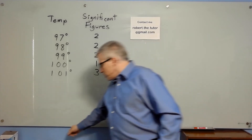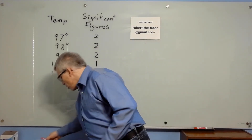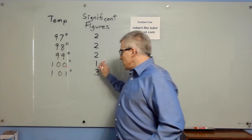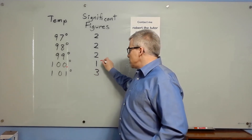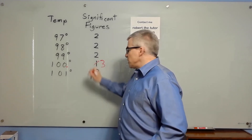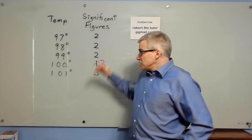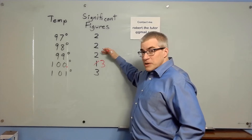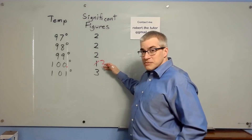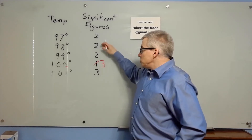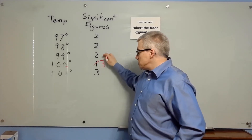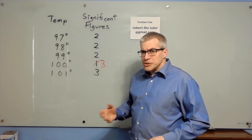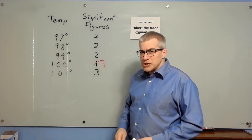Now, some people would nitpick and say you should put a decimal point there so that 100 is actually three significant figures. Yeah, that still doesn't deal with the shelf going from 99 to 100 degrees, right? It's like two, two, two — and then suddenly it's two, three, three. Warming things up a few degrees should not have made that much difference.